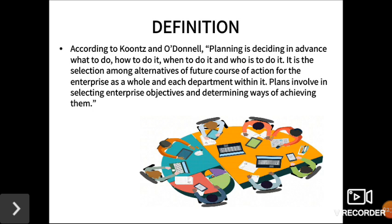Planning is outlining a future course of action in order to achieve an objective, and planning is looking ahead. According to Koontz and O'Donnell, planning is deciding in advance what to do, how to do it, and who is to do it. It is the selection among alternatives of a future course of action for the enterprise as a whole and each department within it. Plans involve selecting enterprise objectives and determining ways of achieving them.